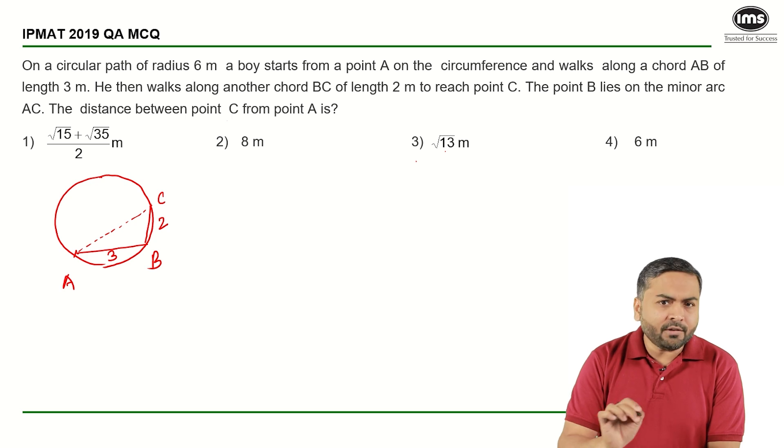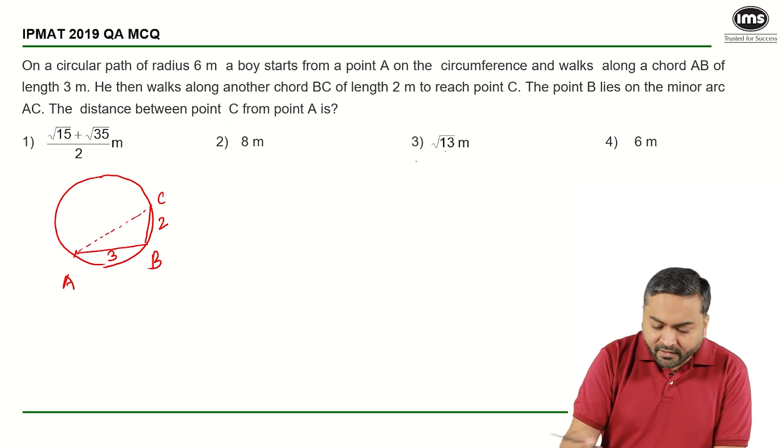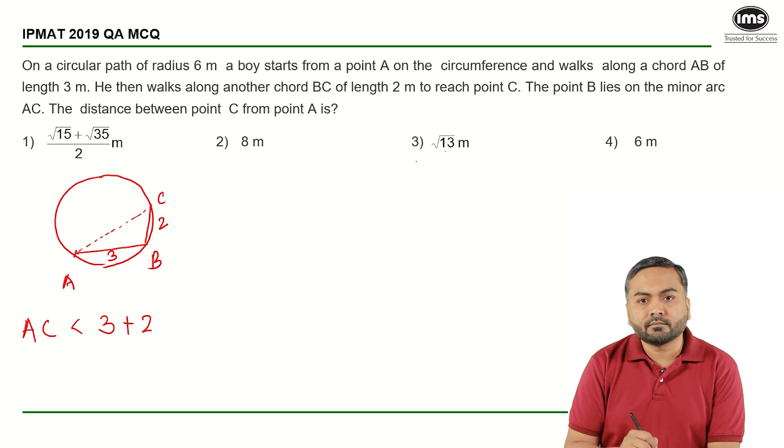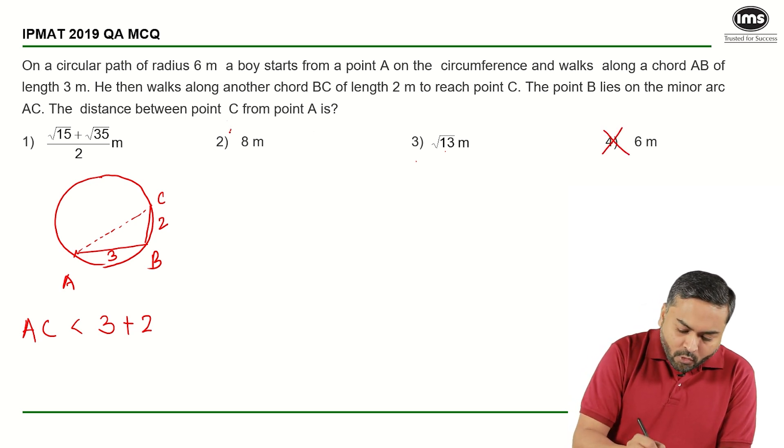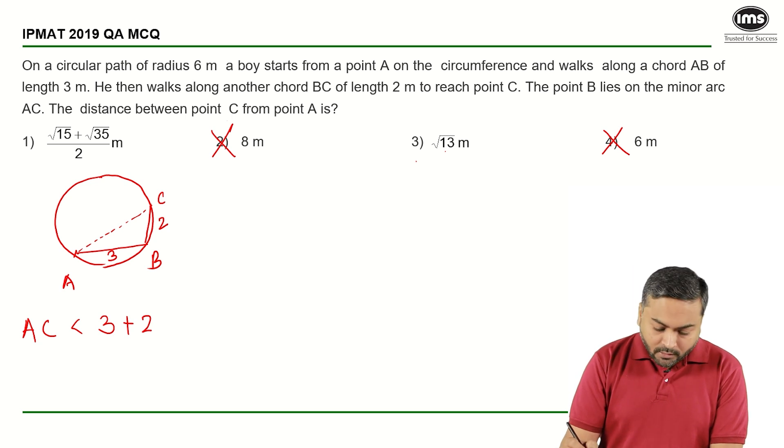So what I can see here is that AC should definitely be less than 3 plus 2, the sum of the other two sides of a triangle, correct? So that eliminates answer option 4 and answer option 2.